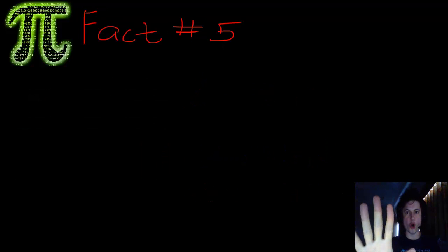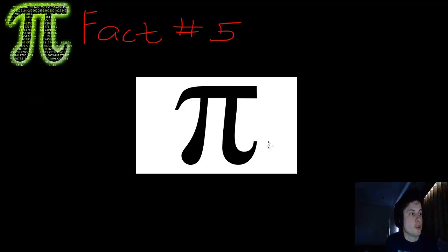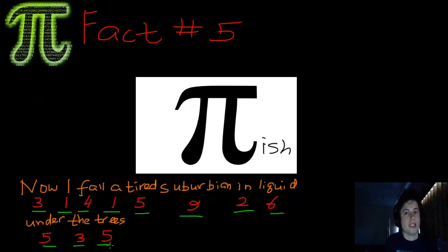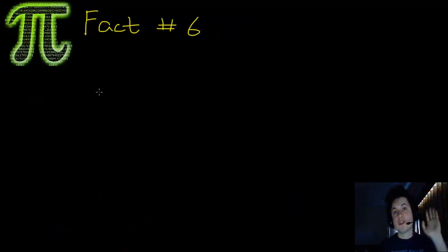Fact number five is that there's actually a language called Pi-lish, obviously a made up language made by math nerds. How does it work? It's really simple. Whenever you make a sentence, the number of letters in successive words has to match the digits of Pi. For example, here's a sentence in Pi-lish: Now I fall a tired suburban in liquid under the trees. If we take the number of letters in every word, they work out to be Pi. That's how Pi-lish works. Everything has to be in Pi.